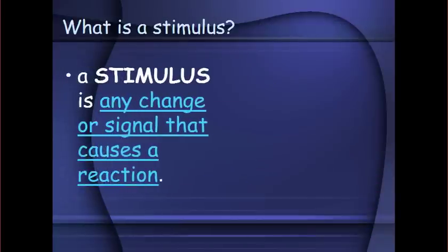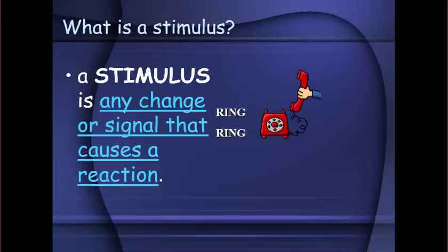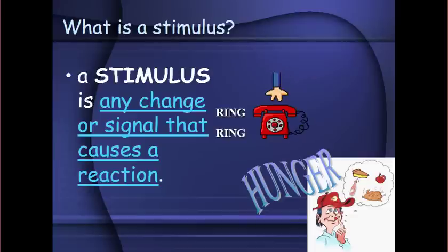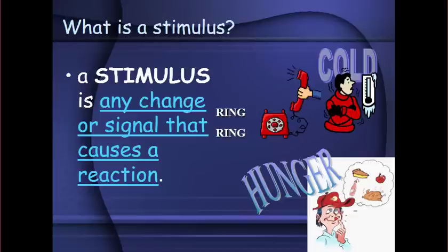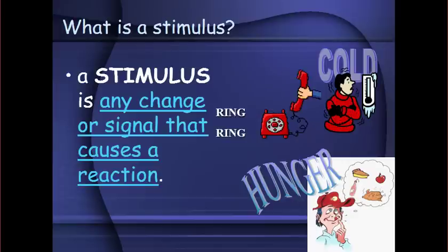What is a stimulus? A stimulus is any change or signal that causes a reaction. Examples of a stimulus include a ringing telephone, hunger — which is a stimulus to go find food — and cold temperatures, which are a stimulus to make you put on warmer clothes.